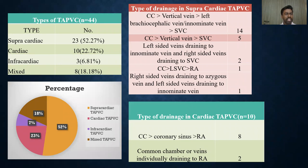Among 44 patients of TAPVC, the supracardiac variant was the most common type, seen in 52% of cases, followed by cardiac and mixed type of TAPVC. Intracardiac was the least common type, seen in 6.8% of cases. In the drainage pattern of supracardiac TAPVC, common chamber continuing as a vertical vein draining into the left brachiocephalic vein, which in turn drains into the SVC, was the most common pattern seen in 14 patients. Common chamber continuing as a vertical vein draining into the SVC directly was seen in 5 patients. Left-sided veins draining to the innominate vein and right-sided veins draining to SVC was seen in 2 patients. Common chamber draining into the right atrium via a persistent left superior vein was seen in 1 patient, and right-sided veins draining to SVC with left-sided veins to innominate vein was seen in 1 patient.